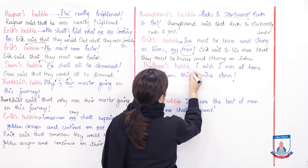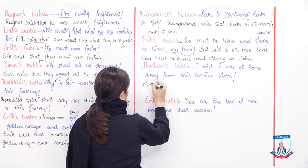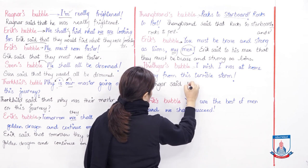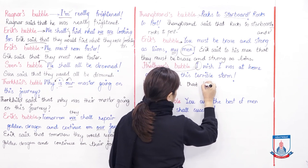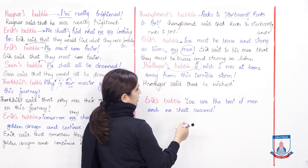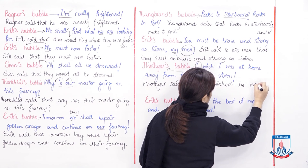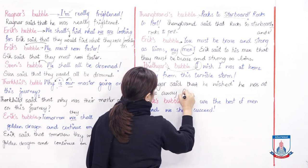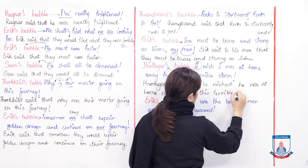Rodgarh's bubble: 'I wish I was at home, away from this terrible storm.' Rodgarh said that — the direct speech is about Rodgarh himself — we write: that he wished. Since 'wish' is in present tense it changes to past tense; for past tense we add past form, so that he wished he was at home, away from this terrible storm.